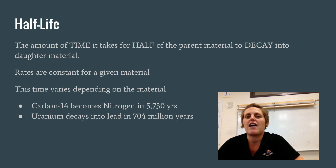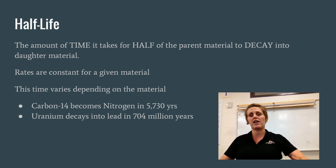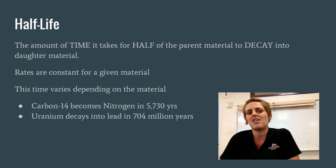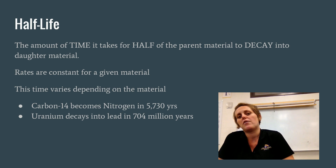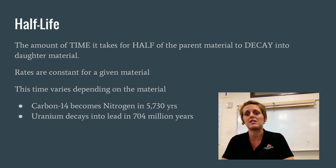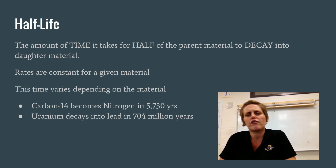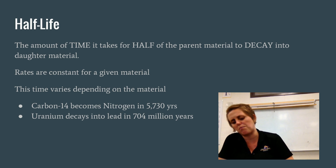This is done by calculating the half-life of certain materials. Half-life is the amount of time it takes for half of your parent material — that's your starting radioactive material — to decay into daughter material. These rates are constant for a given material, so the time varies depending on the material. Some can be as quick as a few seconds or minutes, and others are 5,730 years for carbon-14, or uranium at 704 million years. There are others that are billions of years.